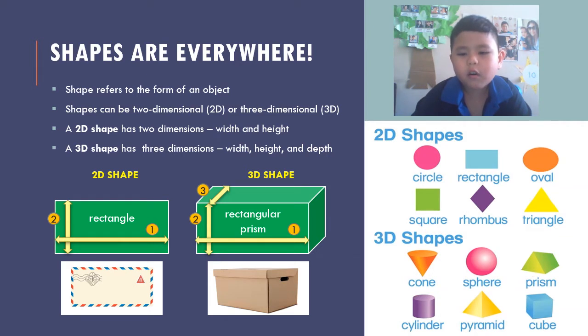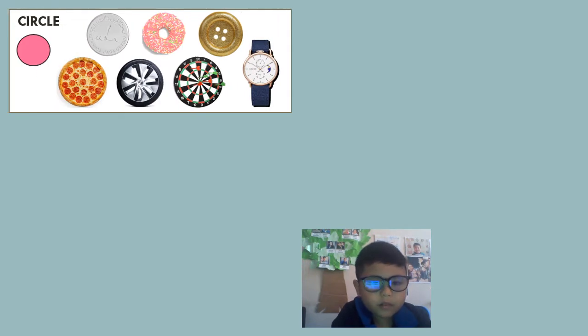There are many more shapes around us. We can find them all. First up is a circle. The circle has no sides and goes round and round.